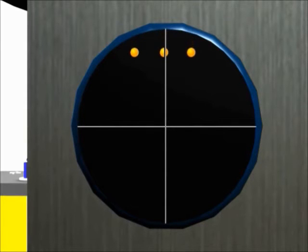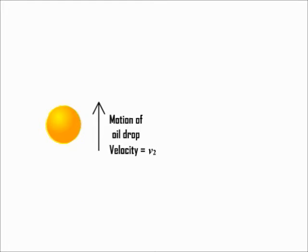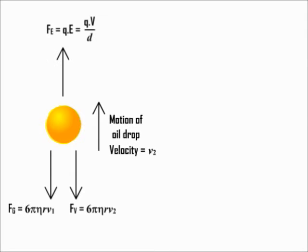Number two, the oil drop may rise up with constant velocity V2 which may be experimentally calculated by recording the time required for the oil drop to rise a certain distance. Now the viscous force acts downward because the oil drop is moving up. Now since the oil drop is rising up with constant velocity, all the forces acting on the oil drop should balance each other. That is,